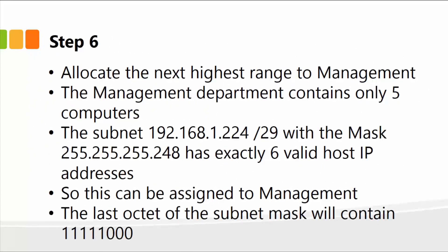Step six: allocate the next highest range to management, our last department, which only contains five computers. The subnet mask with /29, with a mask of 255.255.255.248, has exactly six valid host IP addresses, so this can easily be assigned to the management department.